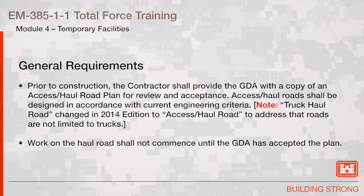Prior to construction, the contractor shall provide the GDA with a copy of an Access or Haul Road Plan for review and acceptance. Access and Haul Roads shall be designed in accordance with current engineering criteria. Note: in this edition, the term 'Truck Haul Road' was changed to 'Access Haul Road' to address that roads are not limited to strictly trucks. Work on the Haul Road shall not commence until the GDA has accepted the plan.